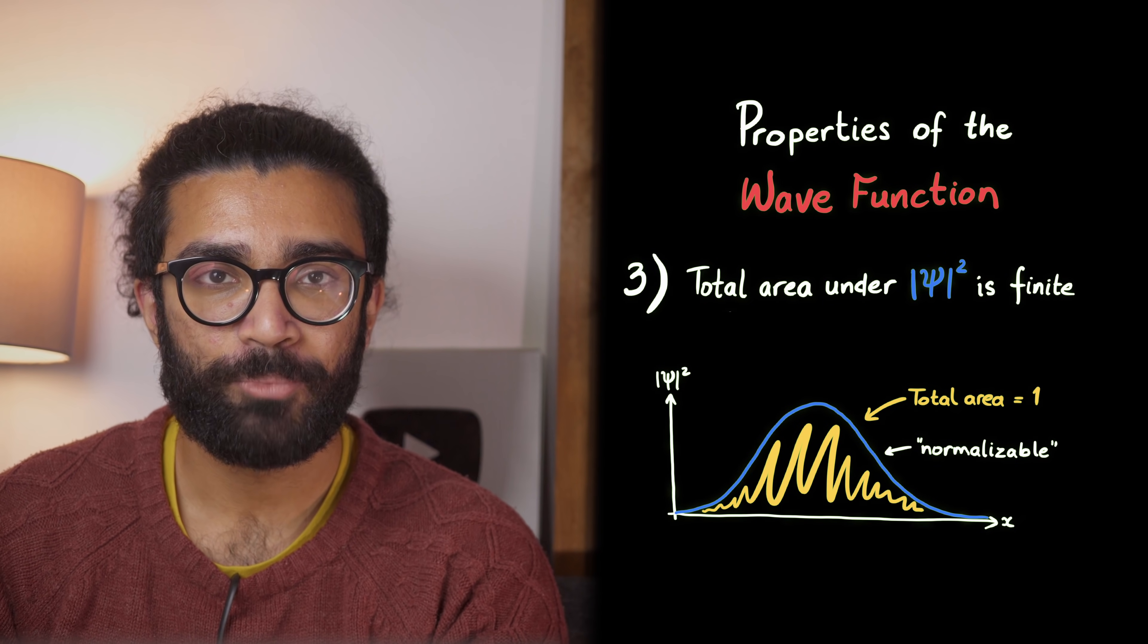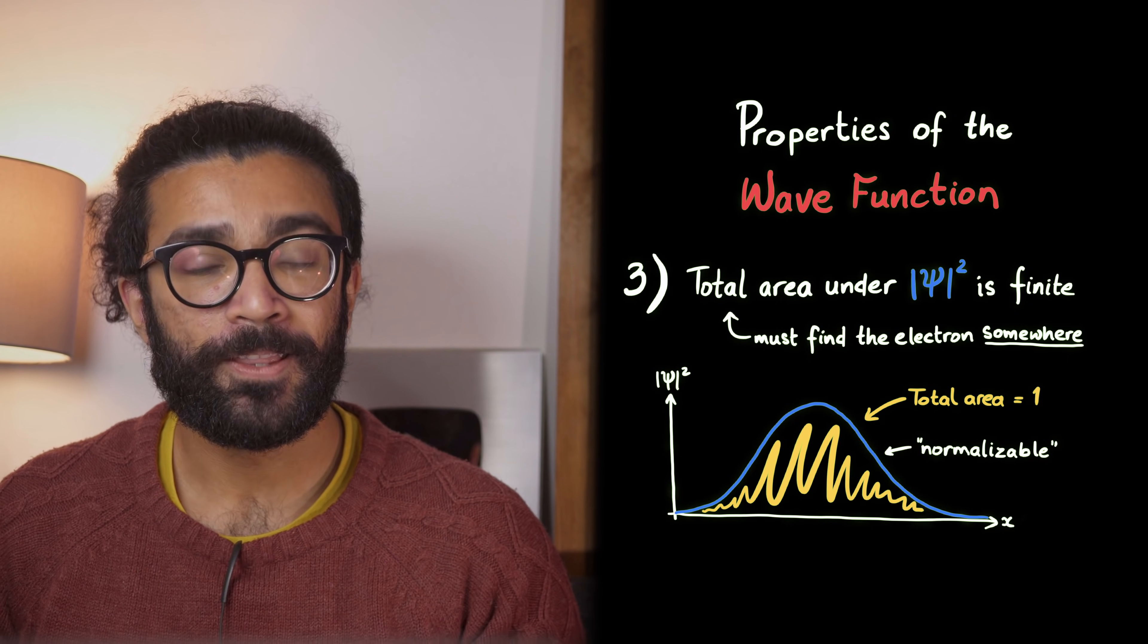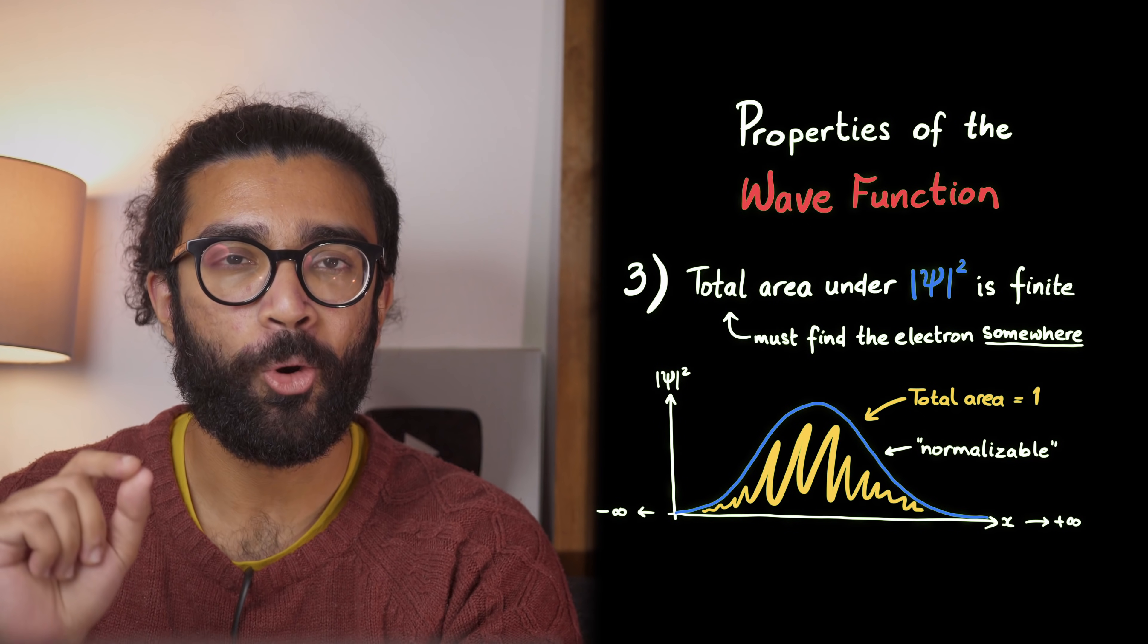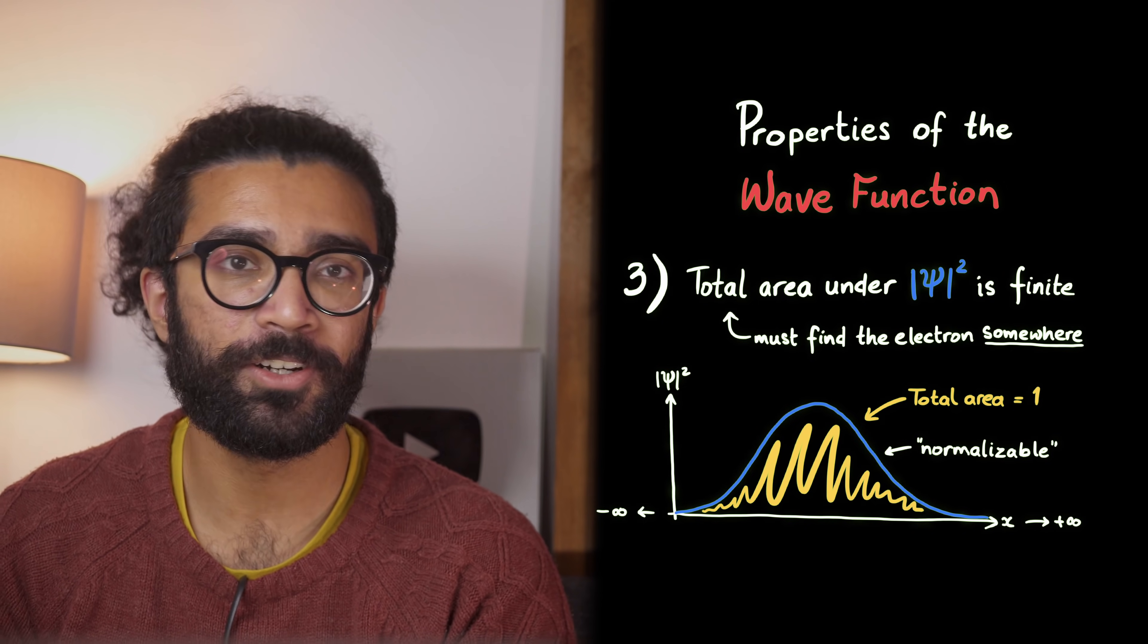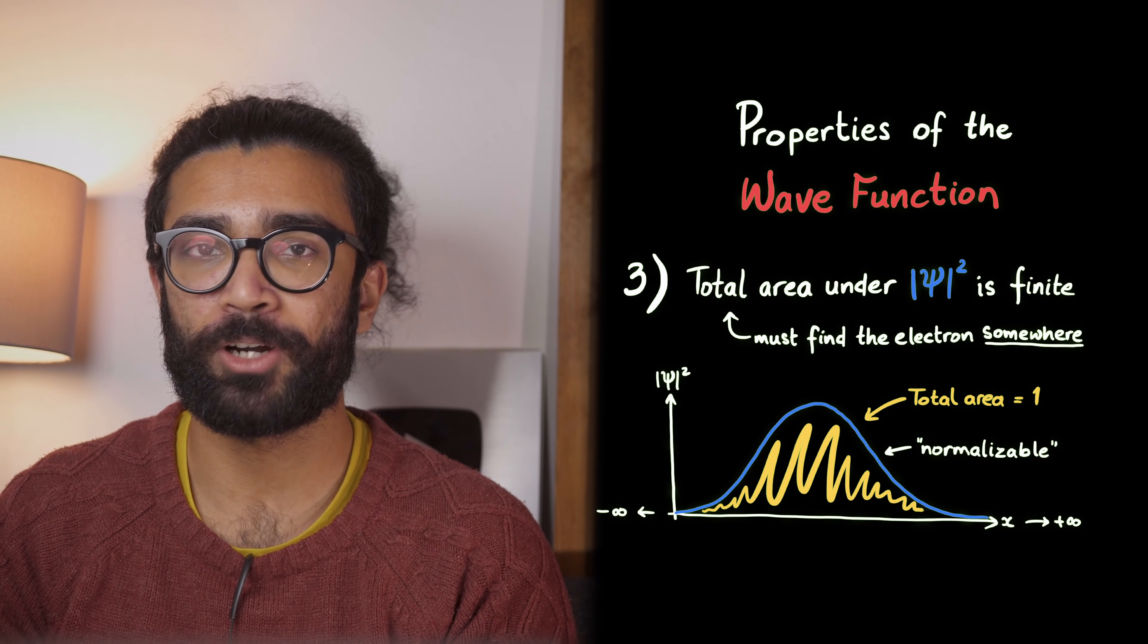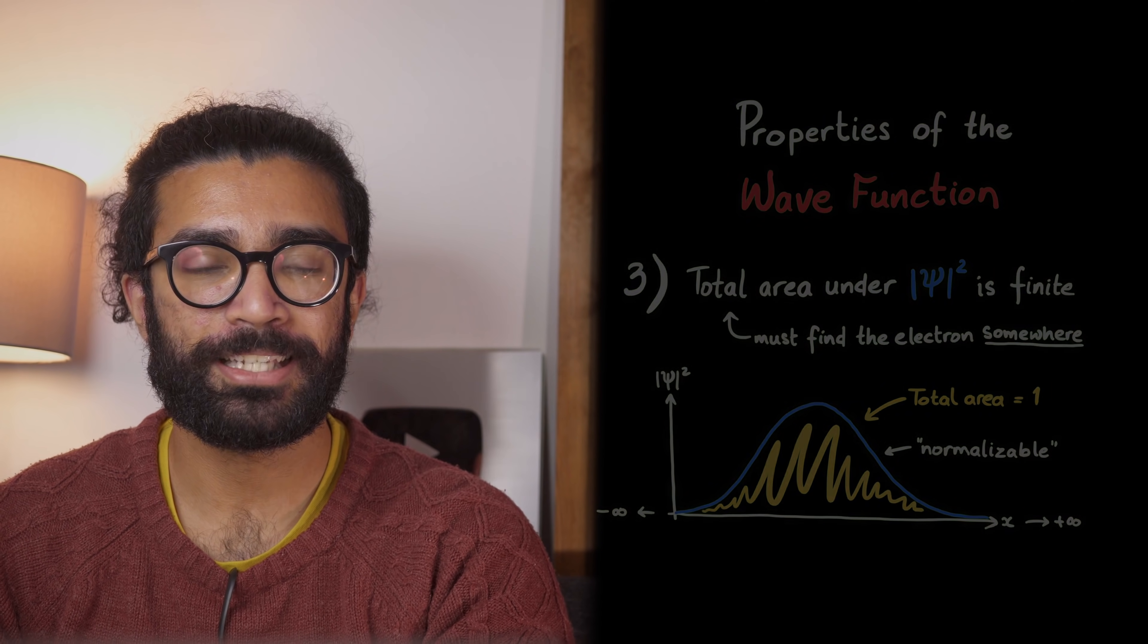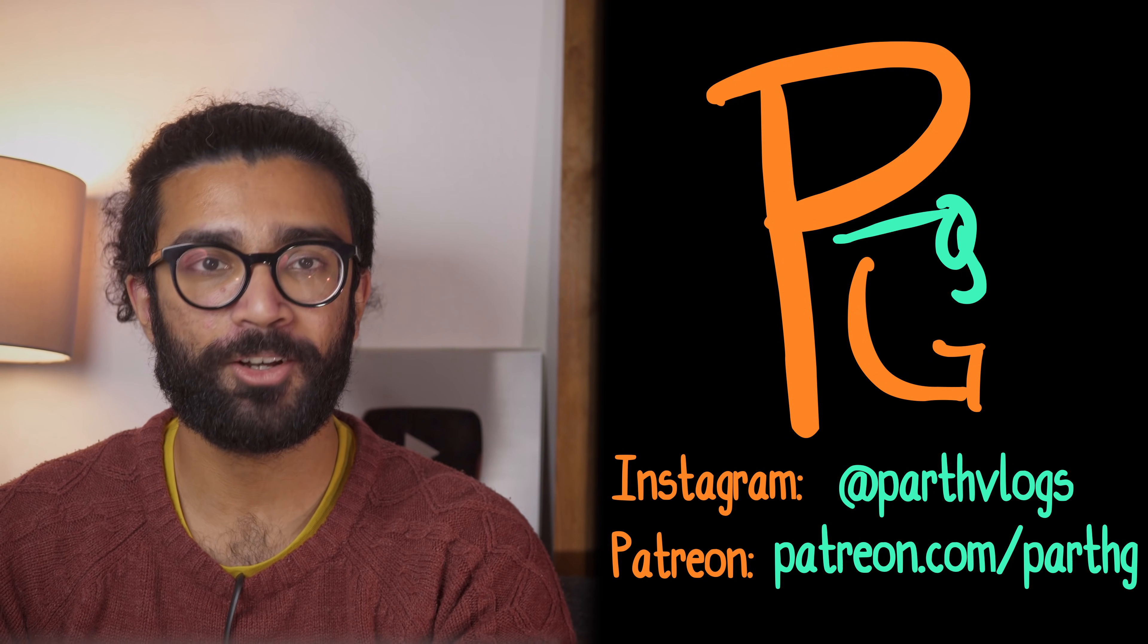The reason is because we know the electron is somewhere in our universe. Therefore, the probability of finding it between minus infinity and plus infinity must be 100% or 1. It must be found somewhere within the universe, and it must be guaranteed to be found if we tried to look for it everywhere. More on the normalization property in this video up here, and we'll discuss this last bit in the next video in this series when we look at another postulate of quantum mechanics.